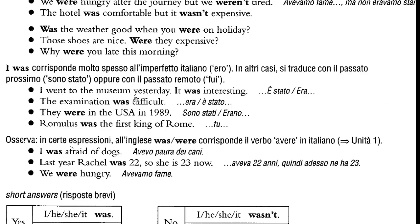'I went to the museum yesterday, it was interesting' — 'è stato, era, fu interessante'. Now, we don't say 'fu' a lot in Italian, but it can be really useful to understand that this is something that is over and has nothing to do with the present. 'The examination was difficult' — 'è stato, fu difficile'. 'They were in the USA in 1989' — 'sono stati, erano, furono'. 'Romulus was the first king of Rome' — 'fu'.